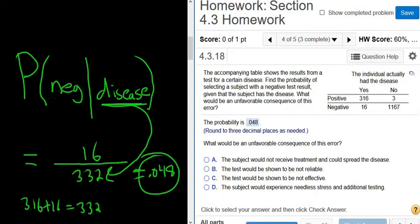So we found the probability of picking a negative result given that the person actually has the disease. So the probability of testing negative given that you actually have the disease is 0.048. That's pretty bad, right?